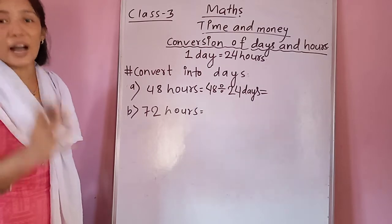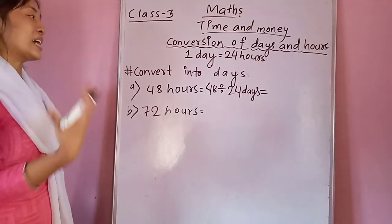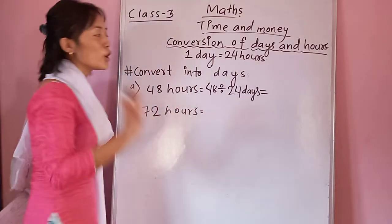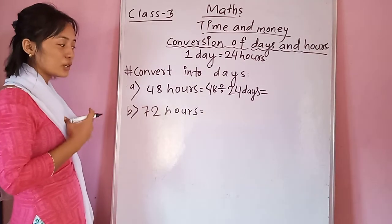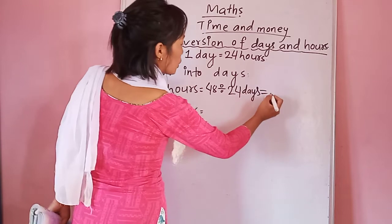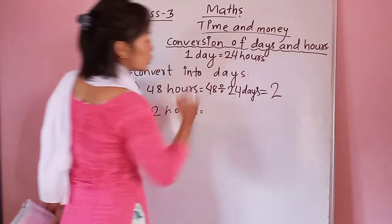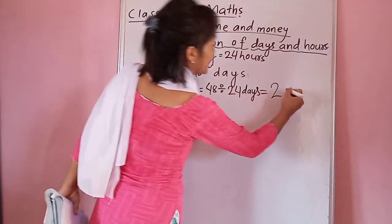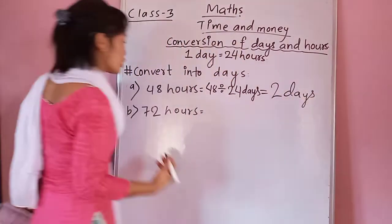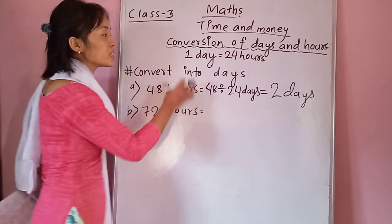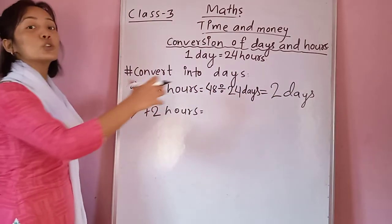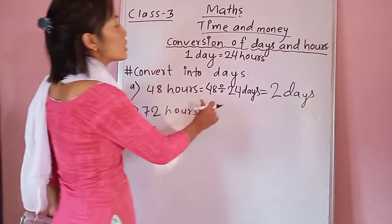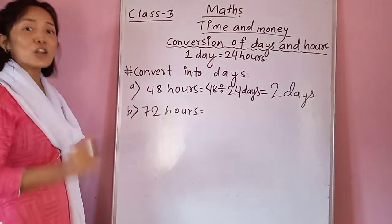Here it is written 48 hours. You write 48 as it is, write a divide sign, and divide by 24. You must know how to divide — if you don't, you can't solve this type of question. 48 divided by 24 gives exactly 2. Write 2 and the unit 'days.' So in 48 hours there are 2 days.